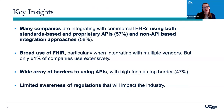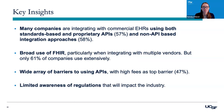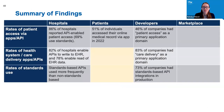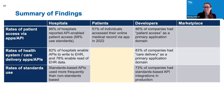To sum up key points: many companies are integrating with commercial EHRs using both standards-based and proprietary APIs, and also non-API-based integration approaches. We found broad use of FHIR, particularly when integrating with multiple vendors, but only about 61% use it extensively. Companies reported a wide array of barriers to using APIs, with high fees as the top barrier. There seemed to be limited awareness of regulations that will impact the industry. In our summary column: 46% of companies had patient access as a primary application domain, 83% had care delivery as a primary domain, and 73% had standards-based API integrations in production.